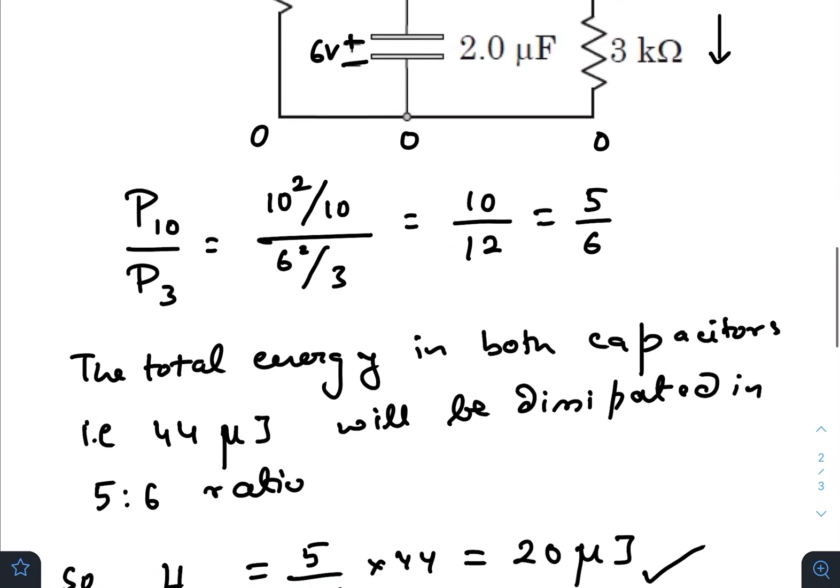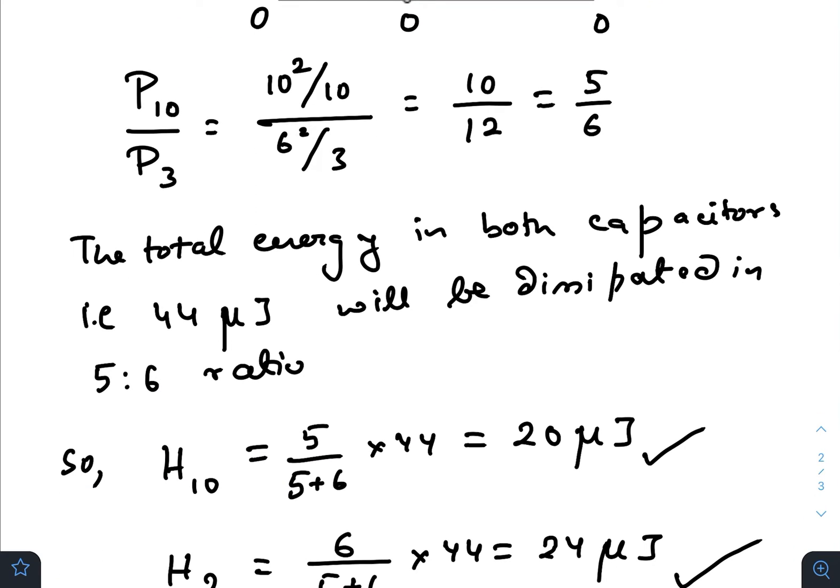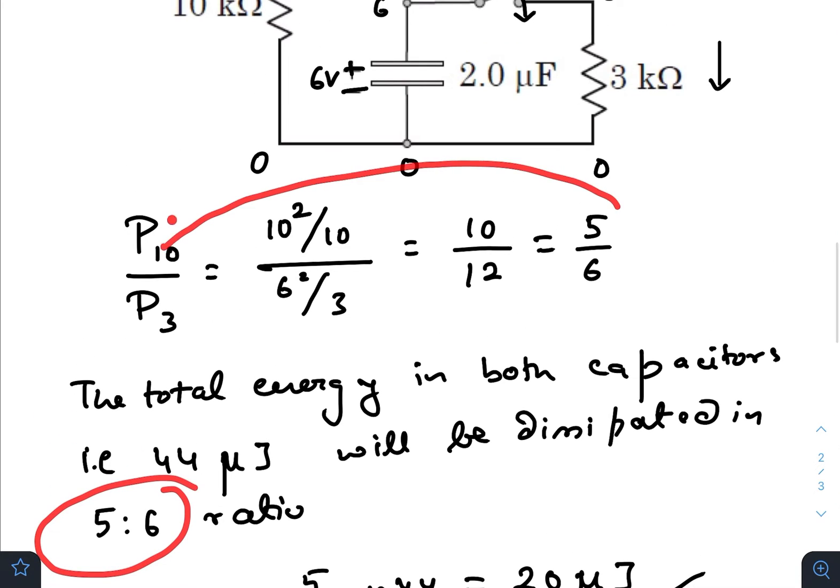So ultimately the ratio that we will get is 5 is to 6. That means the total energy in both the capacitors, that is 44 microjoules, will be dissipated in the ratio of 5 is to 6, where 5 belongs to the 10k resistance and 6 belongs to the 3k resistance.